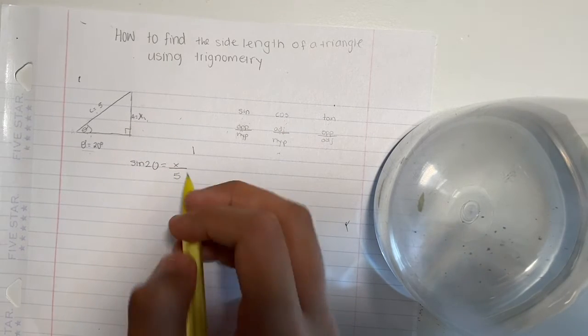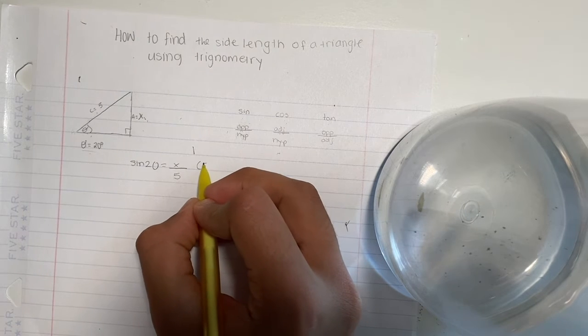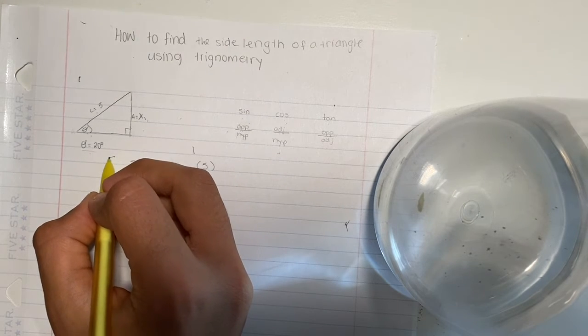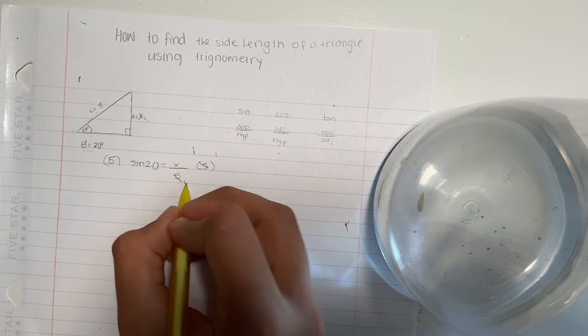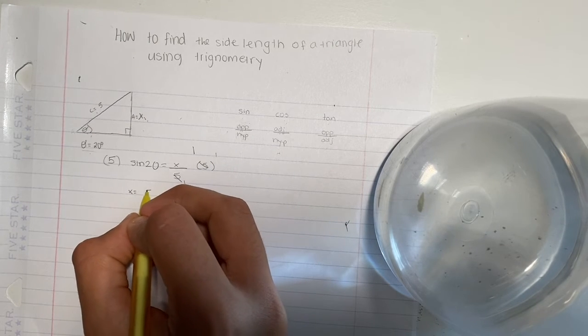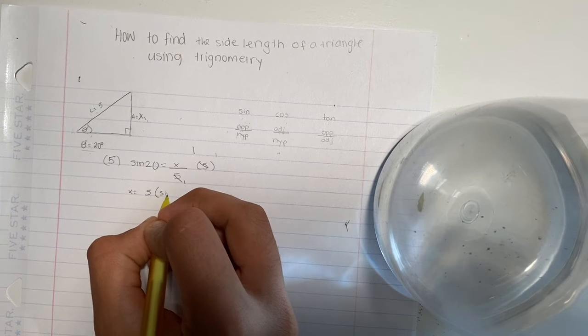So what we have to do to make x by itself is multiply 5 by both sides. So it's going to be x equals 5 times sine of 20.